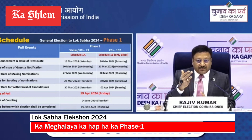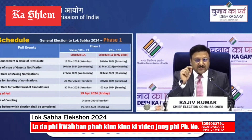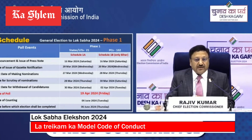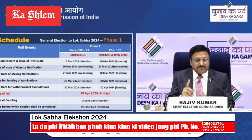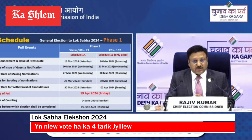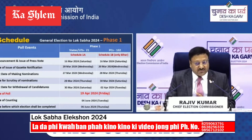This is the Phase 1 schedule. For Bihar, there is a festival, so the notification date is the same but the last date of withdrawal would be 2nd April. Bihar's first phase poll date remains 19th April.